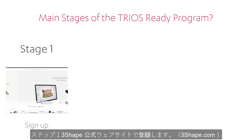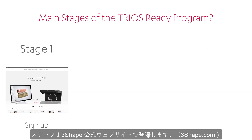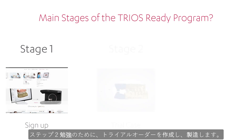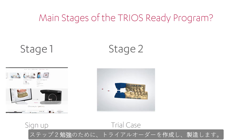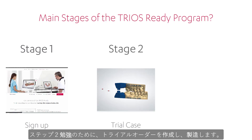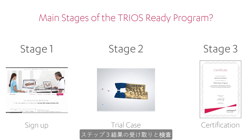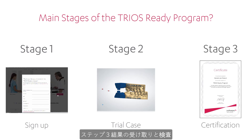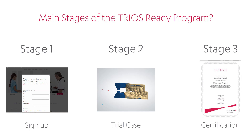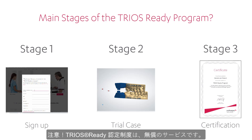Stage 1: Sign up on our website, 3Shape.com. Stage 2: Create and manufacture the special trial case. Stage 3: Evaluation of the results and certification. Remember, the Trios Ready program is free of charge.